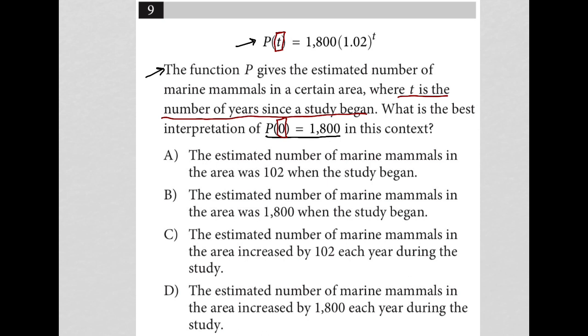So if there have been 0 years since the study has begun, that means we're just beginning the study, right? So at the very start of the study, we have this value of 1800. Well, what does that value represent? Well, that's the P value. And we're told again that P is the estimated number of marine mammals.